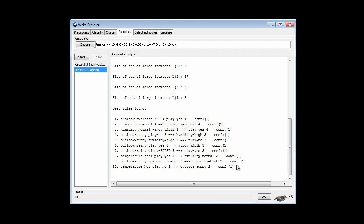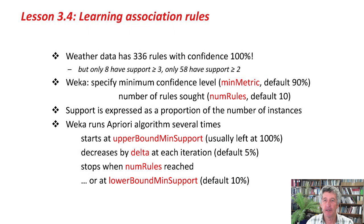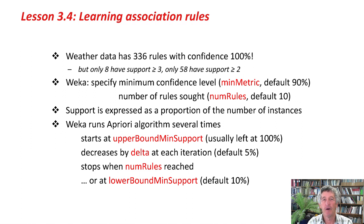The rules are all, in fact, 100% confident. We specify the minimum confidence level — the default is 90% — and how many rules we want — the default is 10. We express the support as the proportion of the number of instances. Then we run the a priori algorithm several times: we start at 100% support and decrease it by 5% each time. We stop when we get the right number of rules with more than the minimum confidence level, or when we reach the lower bound minimum support.